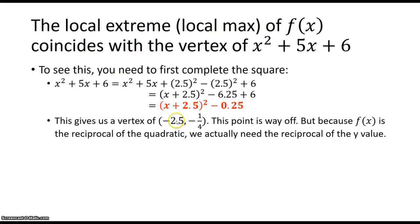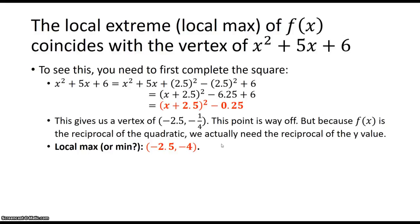So the vertex of the quadratic is at negative 2.5, negative one quarter. But because f of x is the reciprocal of the quadratic, we take the reciprocal of negative one quarter. So what we end up with is the point negative 2.5, negative 4 for the reciprocal of the quadratic we're interested in.